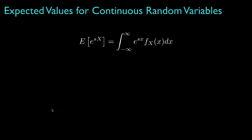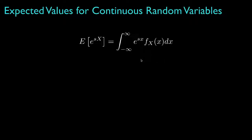Another expected value that is important for random variables is an exponential with an exponent that is the random variable times some parameter s. You might notice that this integral looks similar to the Laplace transform often used in the study of differential equations. For reasons we'll soon see, this particular expected value is called the moment generating function for a probability density function.